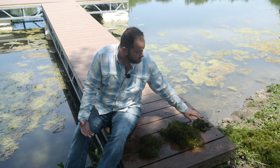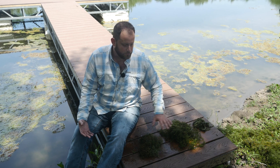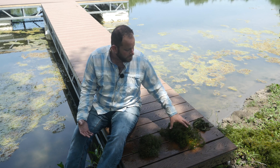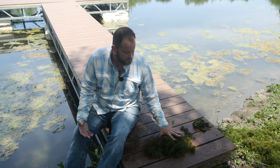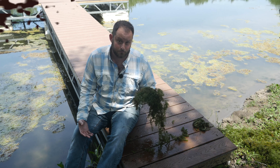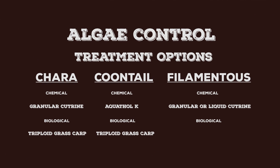For biological options, both triploid grass carp and Mozambique tilapia will control all three. However, triploid grass carp will really focus on chara and coontail predominantly, while Mozambique tilapia will focus more on the filamentous algae. So from a biological treatment perspective, it's important to know how much of each of the three different species you actually have in your pond, so you can select the proper biological control agent.